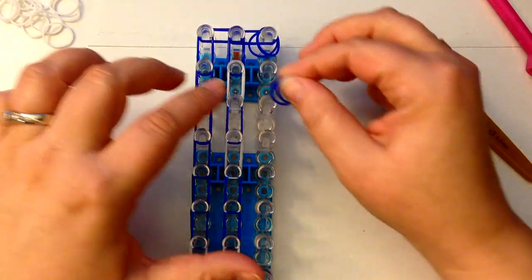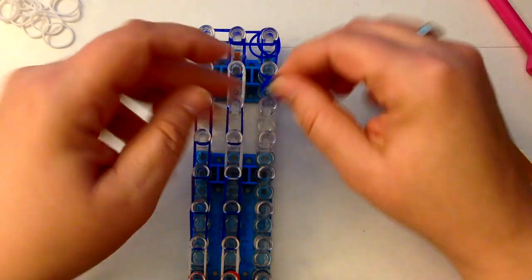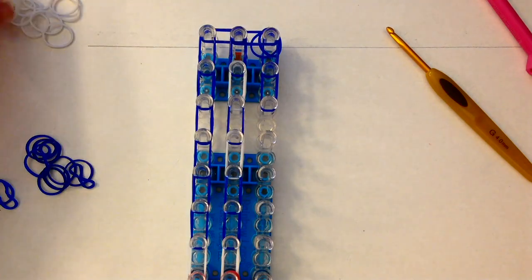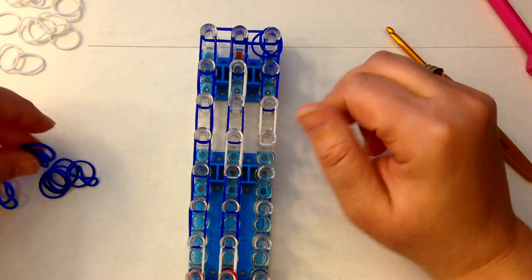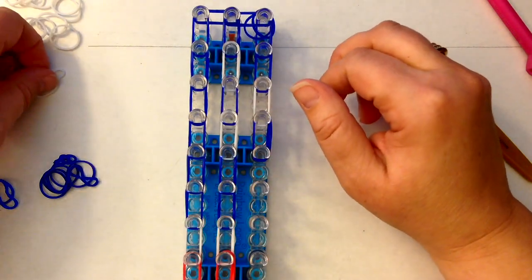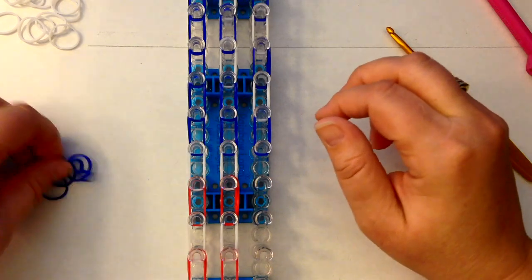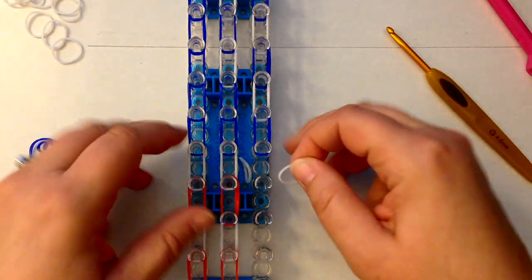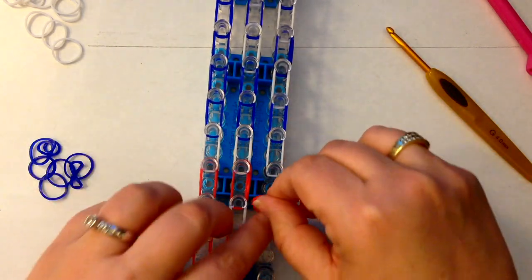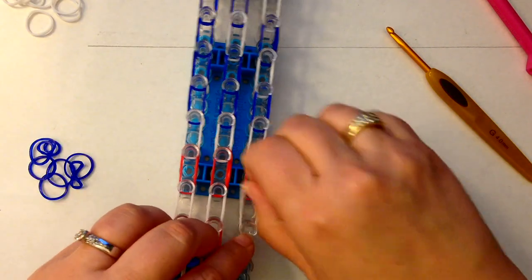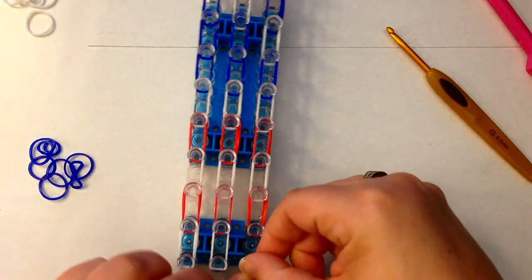Here we're going to start again with a blue, then another pair of blue, then a pair of white and a pair of blue, and a pair of white and a pair of blue. Then we do white, red, white, red, and white.